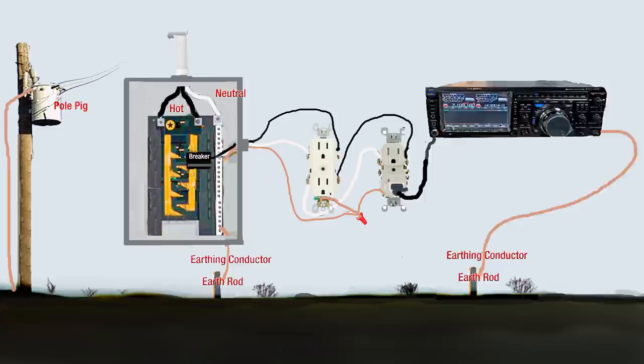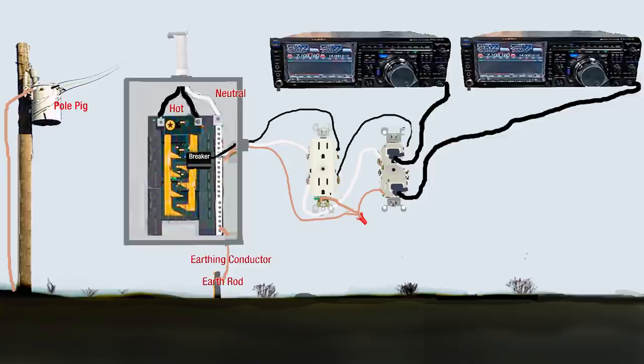If you had two transceivers, and both were plugged into an electrical outlet, it probably would be a good idea to bond those two to run some kind of conductor between the two boxes so they stay the same potential above or below ground, and they're tied together.